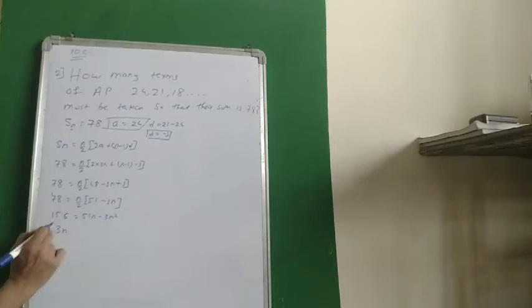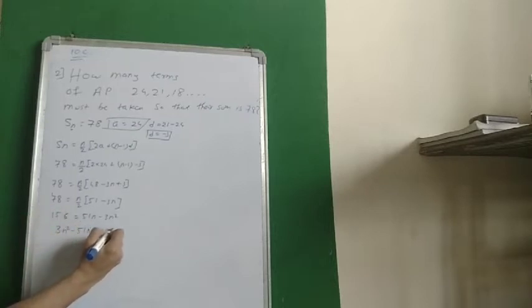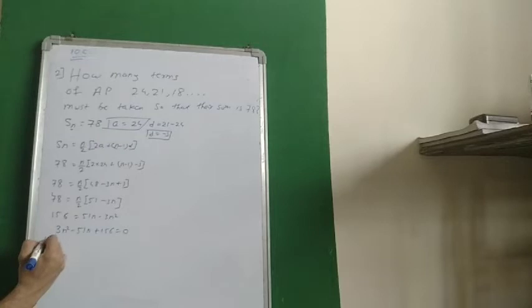So we have 3N square minus 51N plus 156 is equal to 0. We can divide each and every term by 3.